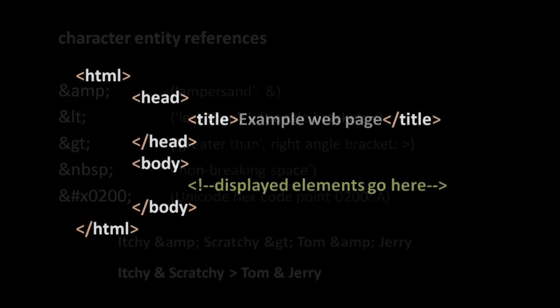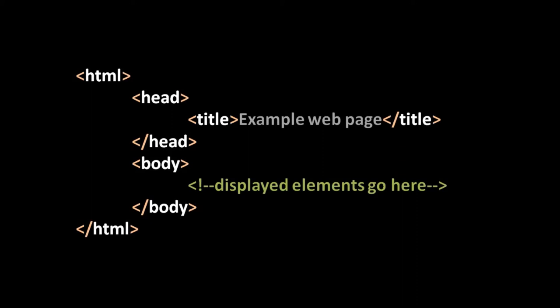Moving on — here is a complete example of an HTML document. A proper HTML document always consists of a single HTML tag, inside which are two other tags: first the head tag for the header, and the body tag in which go all the tags which you actually see displayed in the page. The tags in the header are just things which aren't actually displayed, like the title of your HTML document. So if we were to view this HTML document in our browser, the tab would read "Example Web Page."